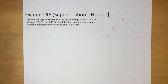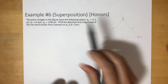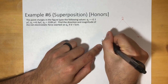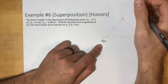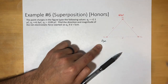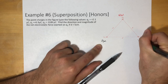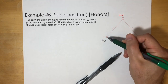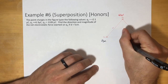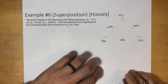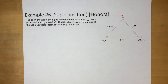This one is pretty difficult — it's a triangle version. The point charges have the following values: Q1 equals 2.1 microcoulombs, Q2 equals 6.3 microcoulombs, and Q3 equals negative 0.89 microcoulombs. Find the direction and magnitude of the net electrostatic force exerted on charge Q1, where D equals 5 centimeters, or 0.05 meters on each side.